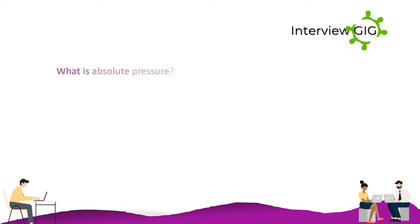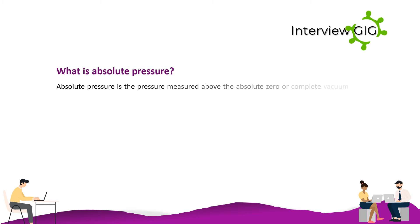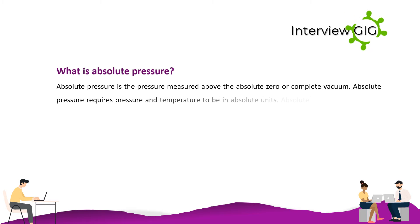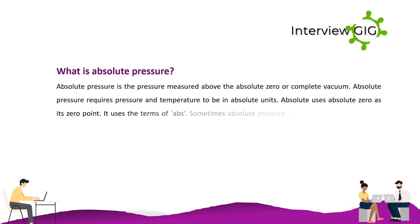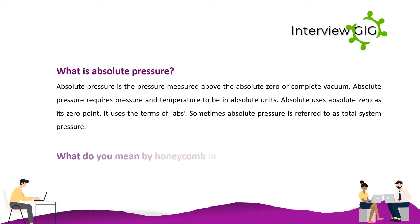What is absolute pressure? Absolute pressure is the pressure measured above the absolute zero or complete vacuum. Absolute pressure requires pressure and temperature to be in absolute units, and uses absolute zero as its zero point, denoted by the term ABS. Sometimes absolute pressure is referred to as total system pressure.